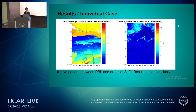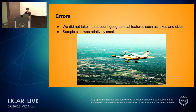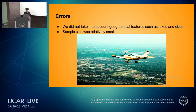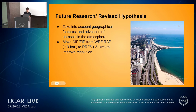Moving to individual case studies: this is a map of the Midwest where black areas indicate SLD and gray areas indicate no SLD. Again, there is no pattern between the planetary boundary layer and what we are seeing in the data. We think one of the main errors was not accounting for geographical factors such as lakes or cities — for example, there will be more aerosols above Chicago than above the lake. The sample size was also relatively small, being just one field mission. For future research, our revised hypothesis is to account for geographical features and the advection of aerosols in the atmosphere.